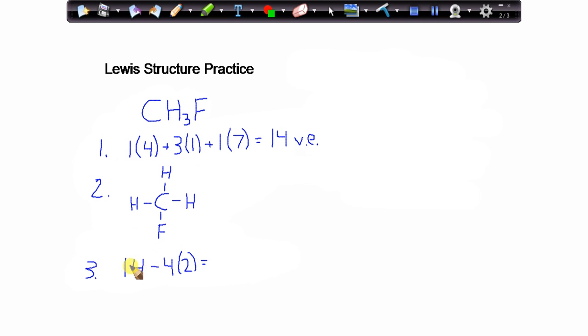In other words, I've used eight of them, I started with 14, so 14 minus eight means at this point in my structure, I have six valence electrons that I've yet to account for, I've yet to assign.